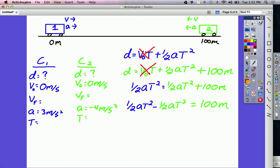Now, we're going to solve for T by factoring it out. We factor T squared out of there. And we get 1 half A minus 1 half car 2 A equals 100 meters. We're going to divide and take the square root.